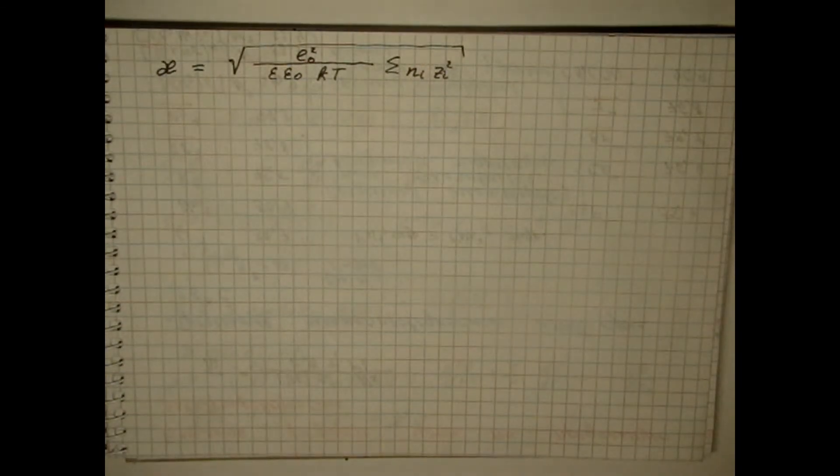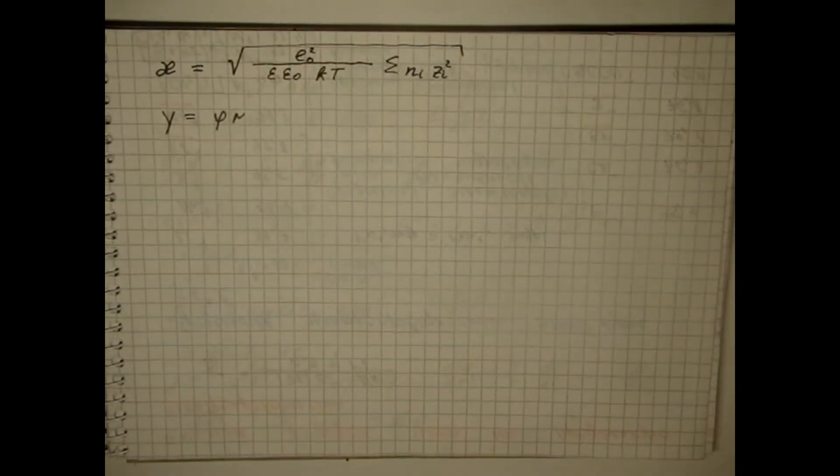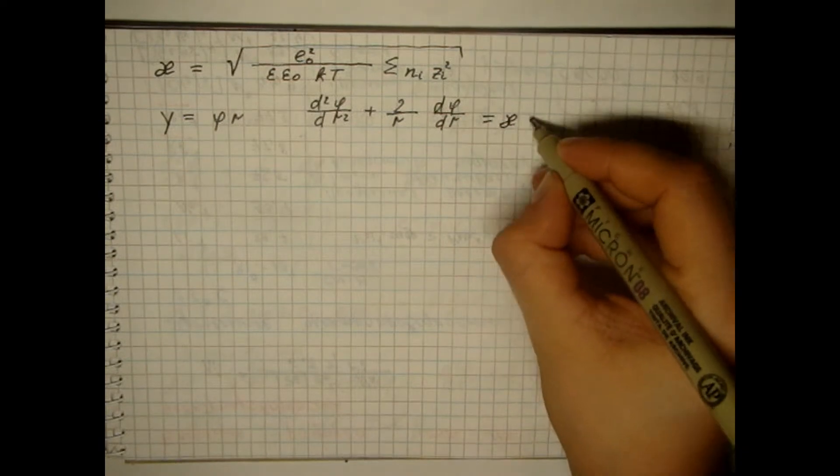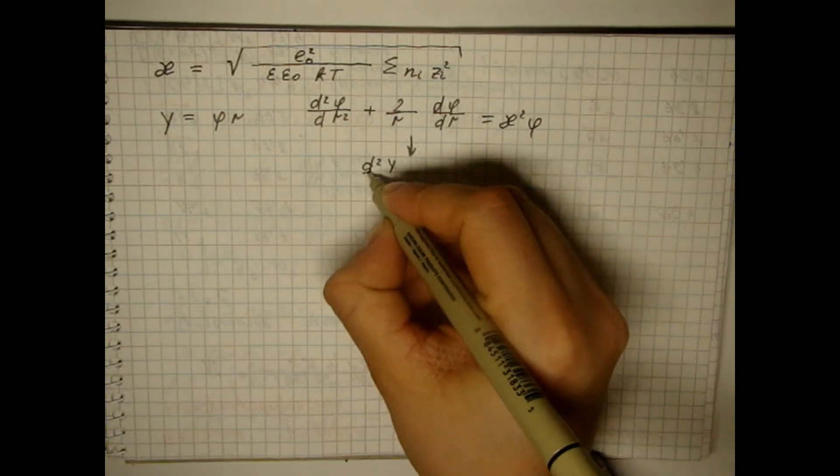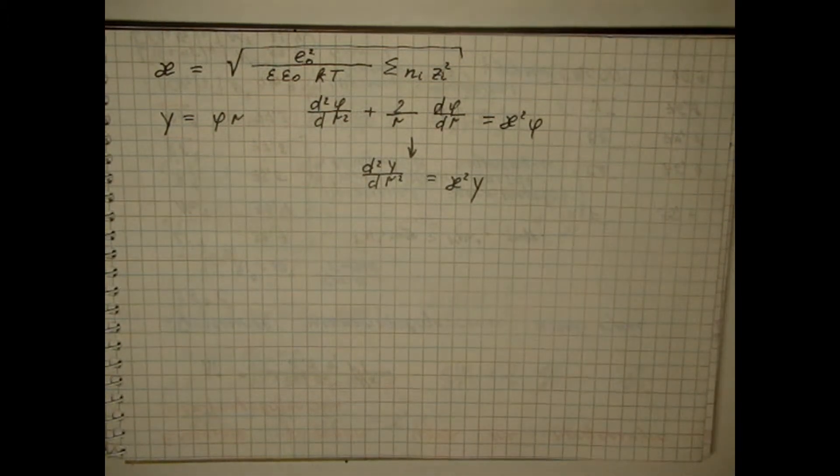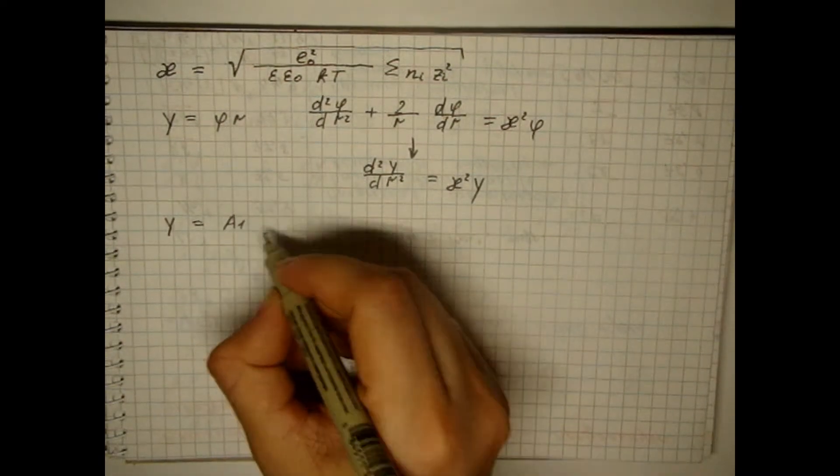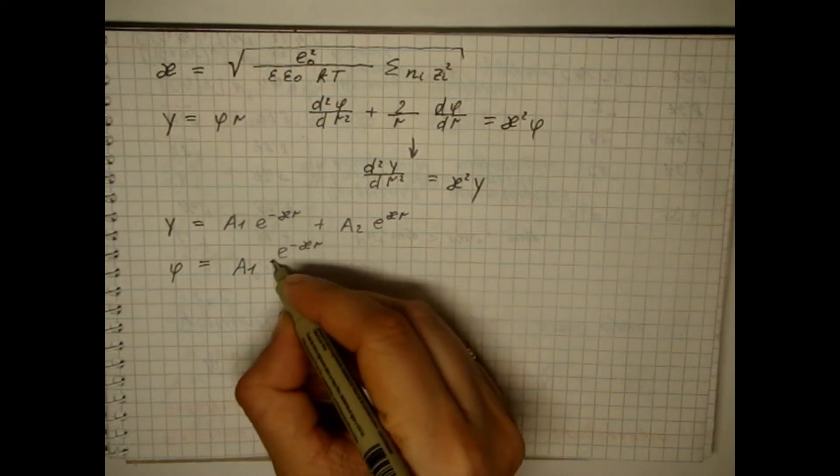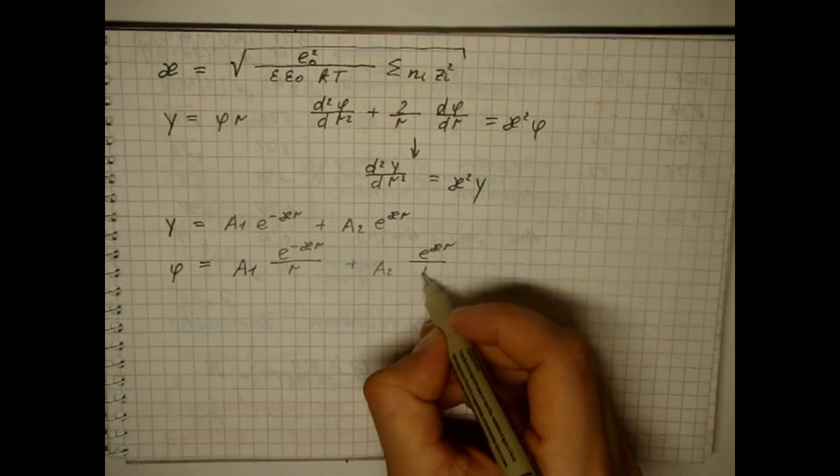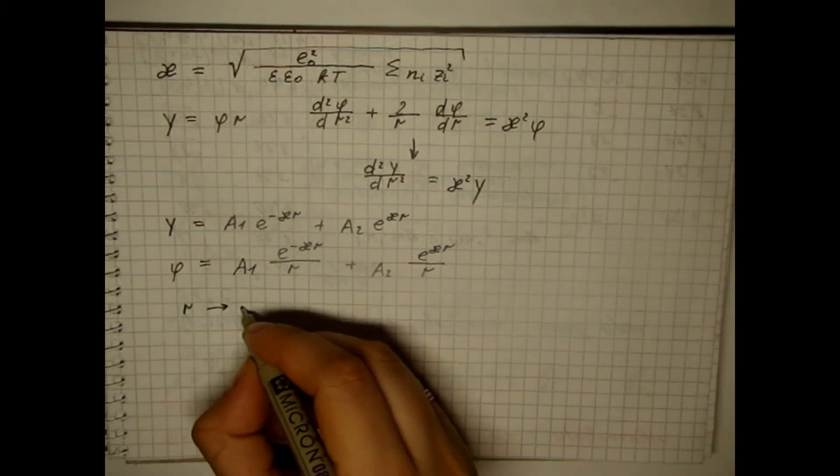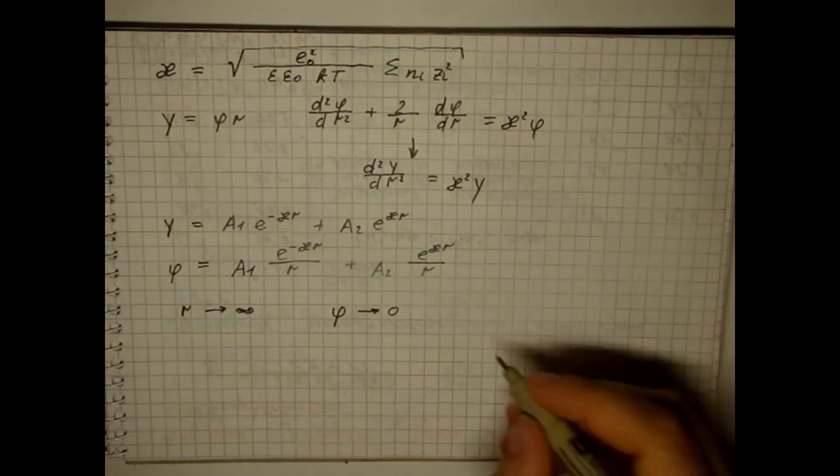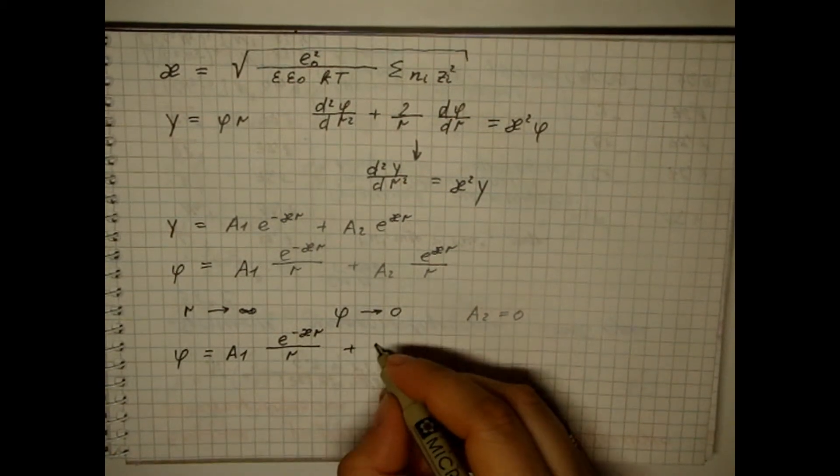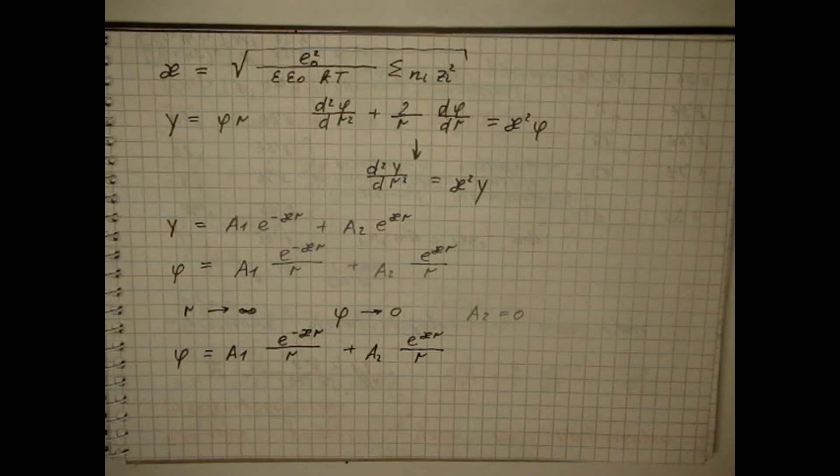Easy to see that when introducing a new variable, the equation takes a standard look and therefore has a general solution. Since at considerable distance from the central ion the potential approaches zero, this determines the integration constant.